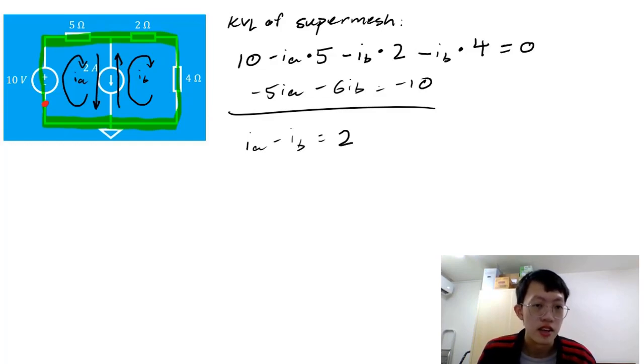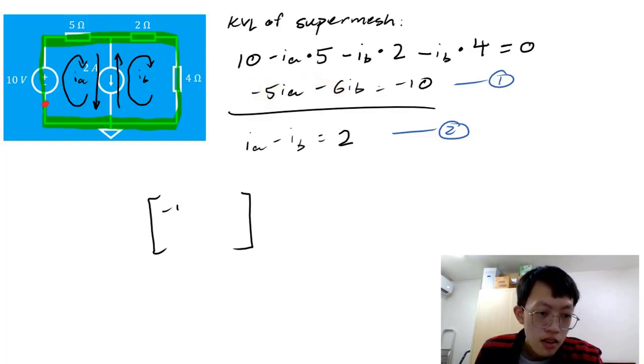So, this is our second equation. And in fact, we're done. We have our two equations and two unknowns. One equation here, the second equation here. Now, we'll just box it up in our matrix format. Again, to get this matrix, you take the coefficients here. And you take the coefficients here. Here is positive 1. Here is negative 1.